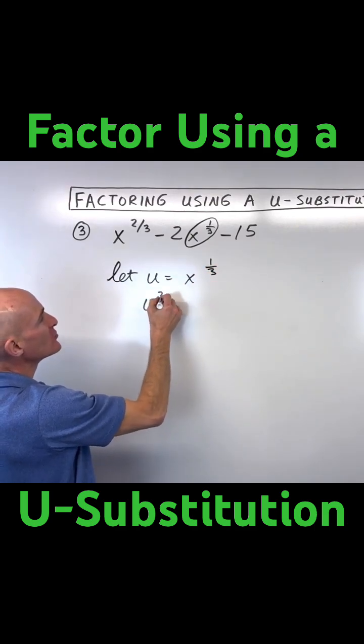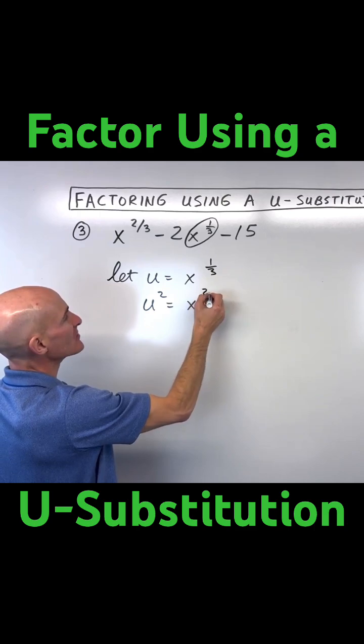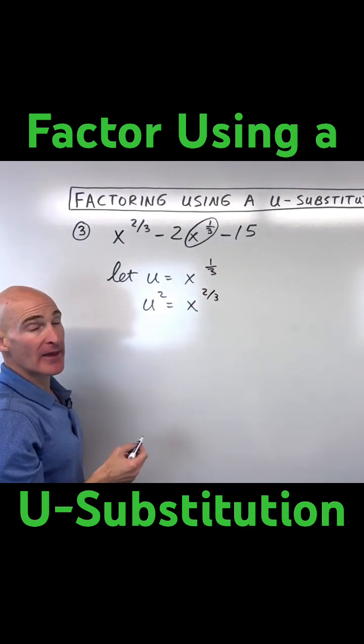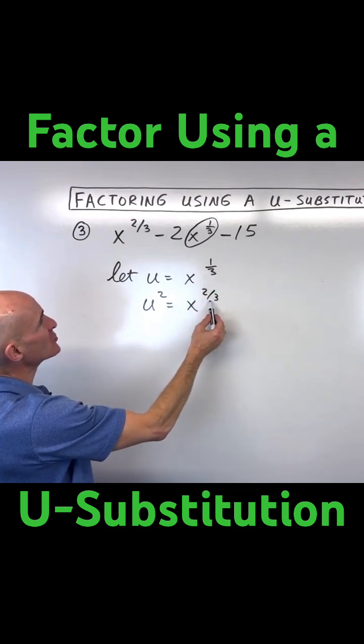And if I square both sides, u² is equal to x to the 2/3. Because when you raise a power to a power, you multiply the exponent. So 1/3 times 2 is 2/3.